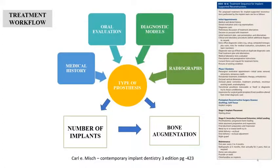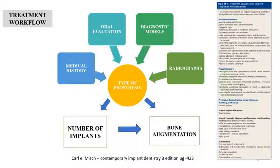Coming to treatment workflow: to select the number of implants or the treatment plan, we need a proper medical history followed by oral evaluation, diagnostic models and radiographs, on which we decide the number of implants, bone grafting, and the type of processes required. This can be divided into an initial appointment, then phase 1 dentistry, followed by a peri-implant reconstructive surgery phase with stage 1 (implant placement), stage 2 (secondary stage), and then the maintenance phase.